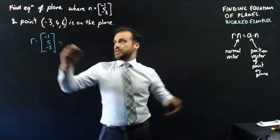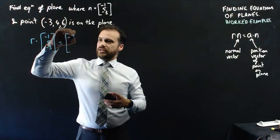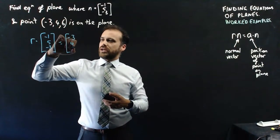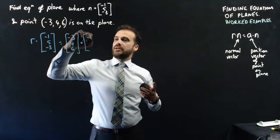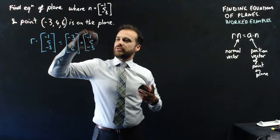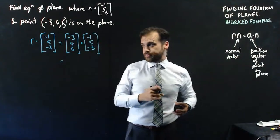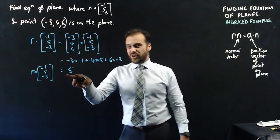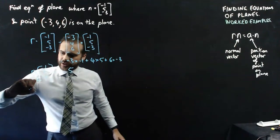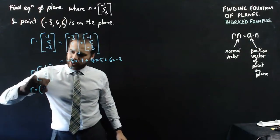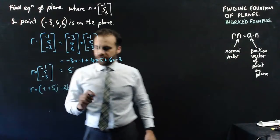And our a is a point. Now that point we need to write more as a position vector: -3i + 4j + 6k, dot, and then our normal vector again: negative 1, 5, negative 3. We're going to calculate that dot product — this times this, this times this, this times this, and add them together. The dot product of those is 5. So I'll write it as r dot (-i + 5j - 3k) equals 5.